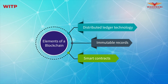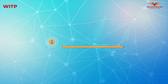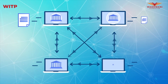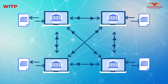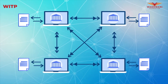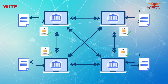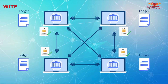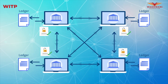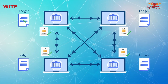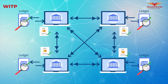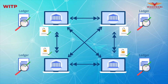Distributed ledger technology: in a blockchain, transactions are distributed and stored across multiple computers. All parties have access to the distributed ledger and record of transactions. The distributed nature of transaction records across many computers allows parties to verify and audit transactions independently and at a low cost.